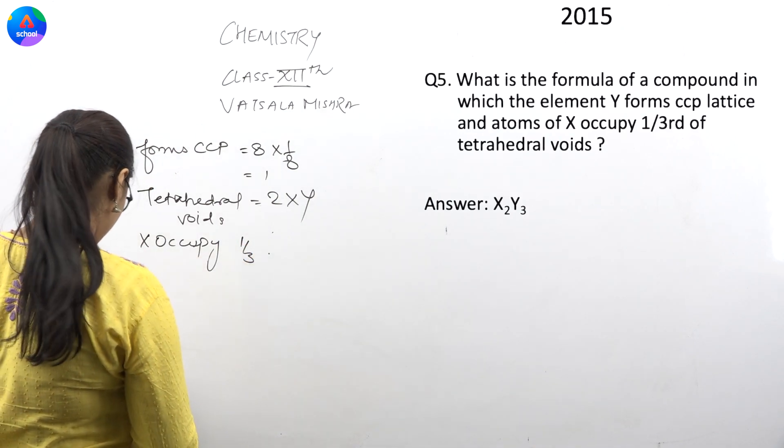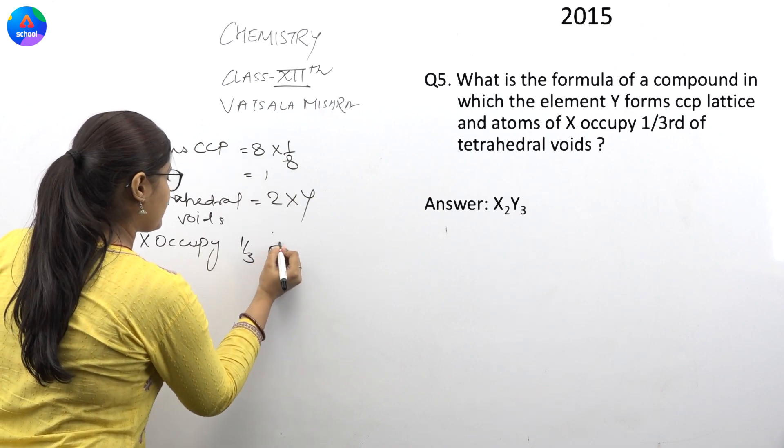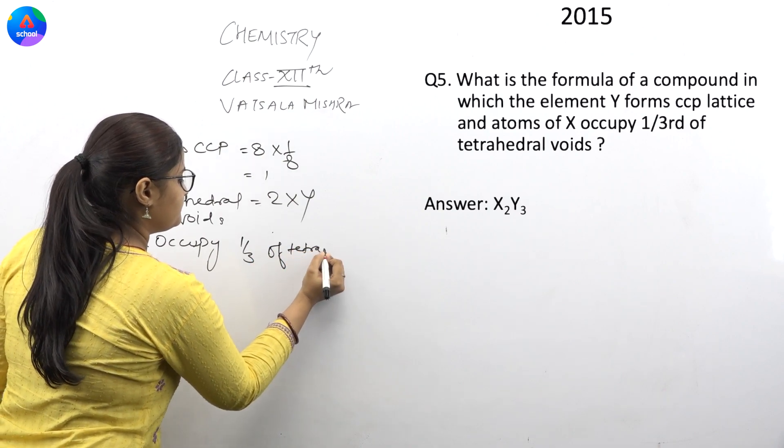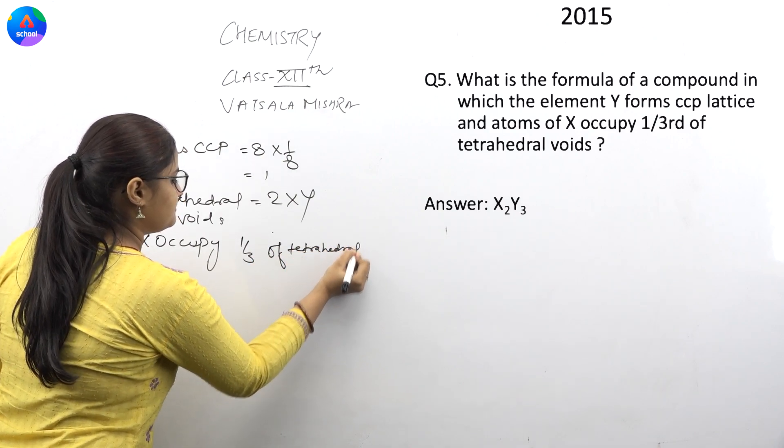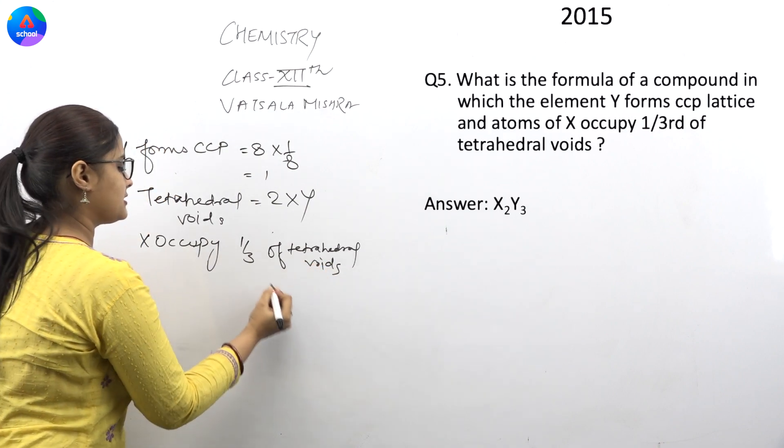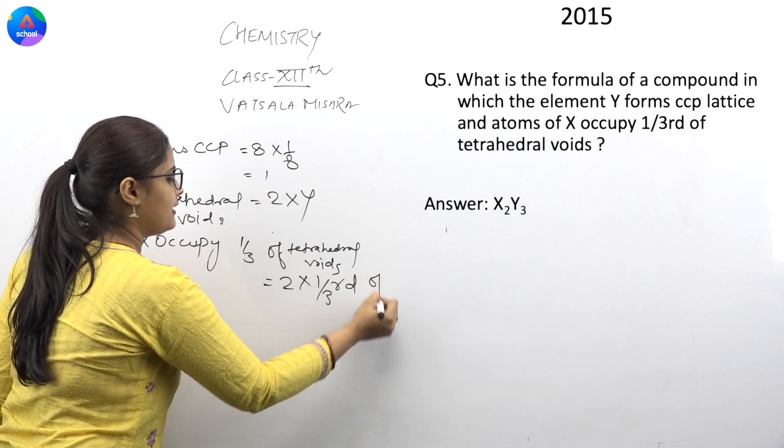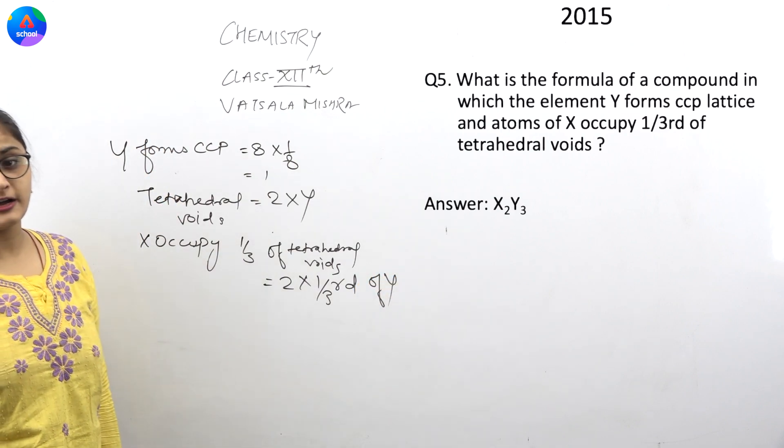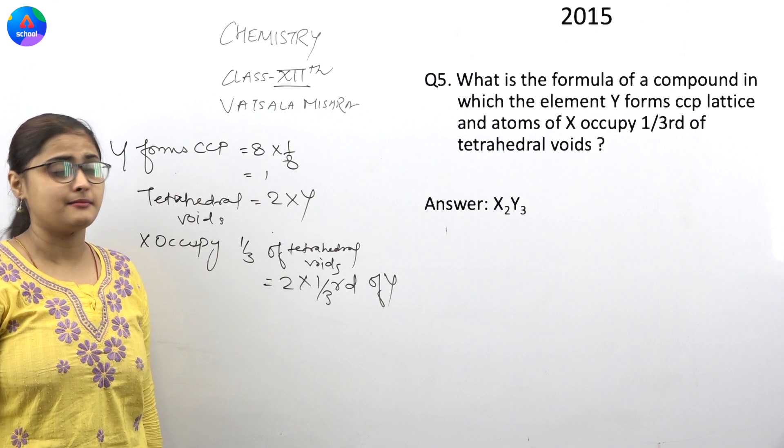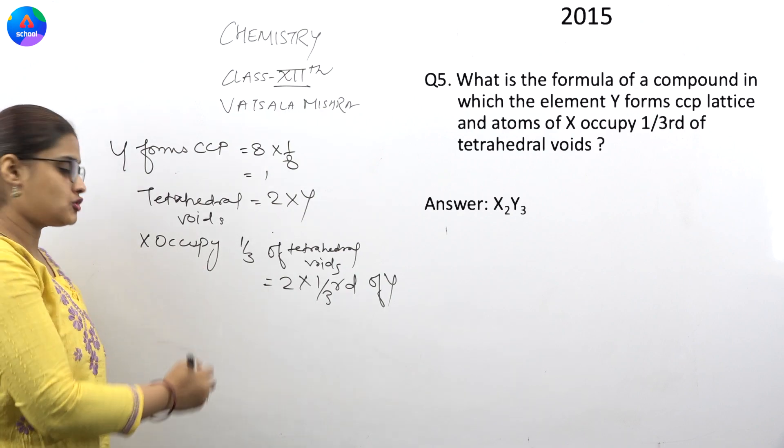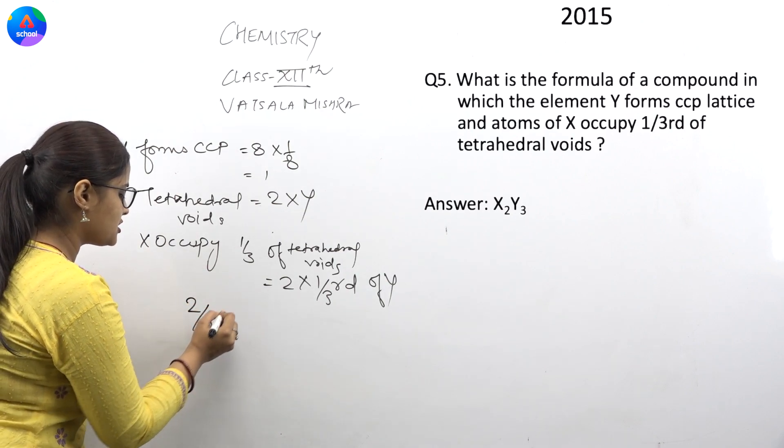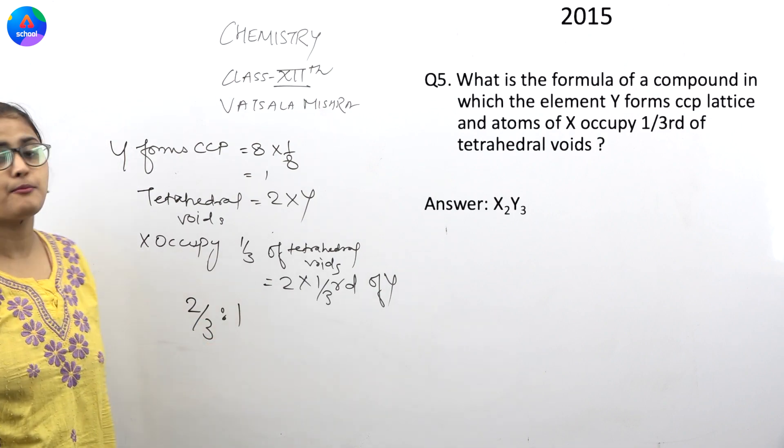Because X occupies you 1 by 3rd position. So, if X occupy one-third of tetrahedral voids, then you will take 2 into 1 by 3. That means that this is the Y-atom. So, if this is the Y-atom of 2/3, it will be like this, meaning that your position is 2/3 upon 1.